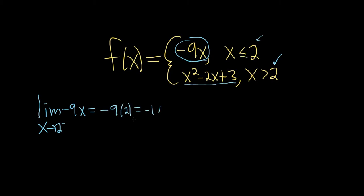From the left, we get negative 18. Let's investigate the limit of this function from the right. From the right, that means x is bigger than 2. If we're approaching from the right, it's bigger, so we use the bottom piece.